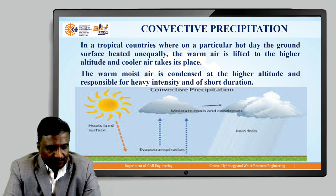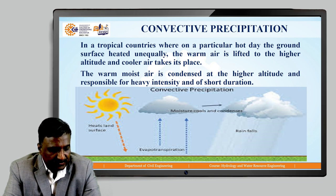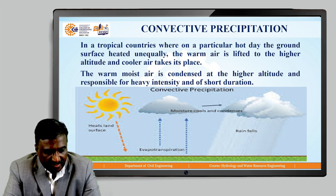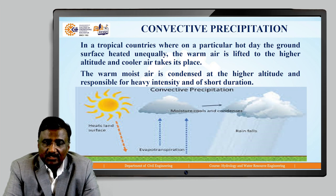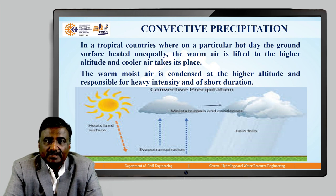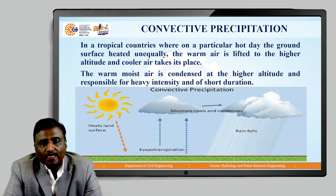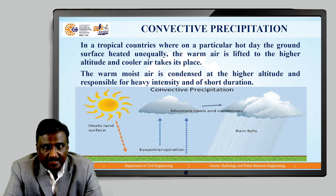Convective precipitation. In tropical countries, on a particular hot day the ground surface is heated unequally. The warm air is lifted to higher altitude and cooler air takes its place. The warm moist air is condensed at higher altitude and is responsible for heavy intensity, short duration rainfall. During sunny days, due to solar radiation, water bodies get heated up and water vapours start moving upward.